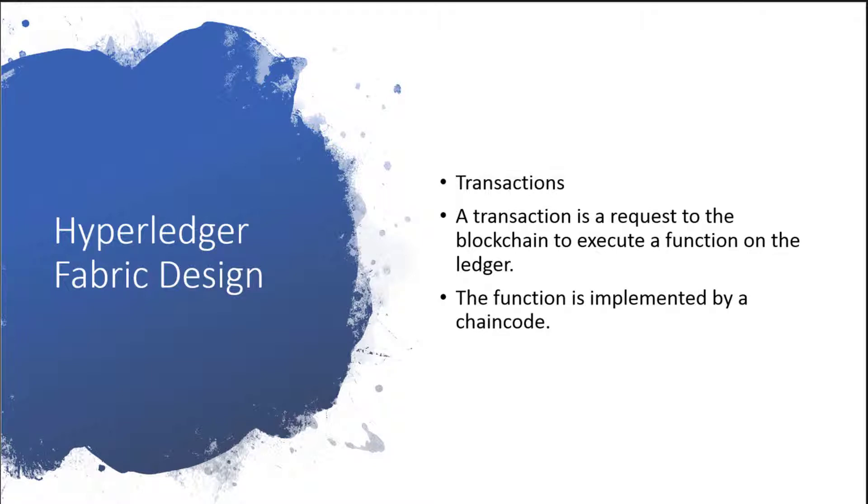Then you have transactions. A transaction is a request to the blockchain to execute a function on the ledger. How does this function actually get executed? It's implemented through what's called chain code. Chain code is a smart contract - computer code - and the goal is to execute that transaction as efficiently as possible.